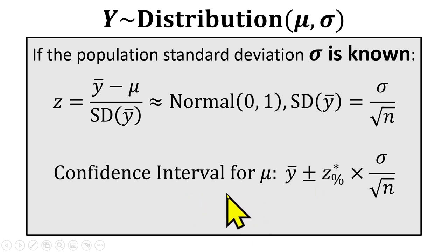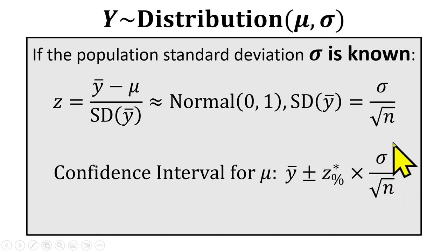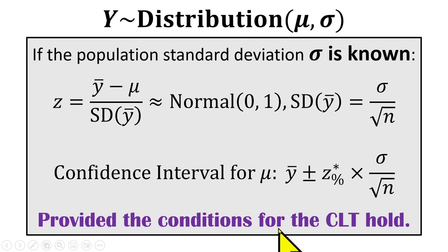It follows, then, that the confidence interval we can build from the sample mean is just built in the normal way. We have our sample mean plus or minus a margin of error. That margin of error is a function of your z-score — your critical value for that level of confidence — and the standard deviation of the mean. All of this, of course, provided the conditions for the central limit theorem hold. We need to consider those conditions whenever the distribution for the individual measurements is not normal. The basic conditions are that observations must be independent and the sample size must be large enough.